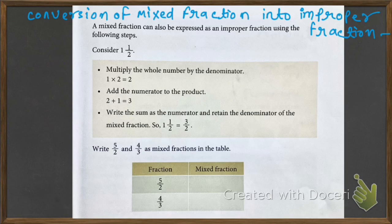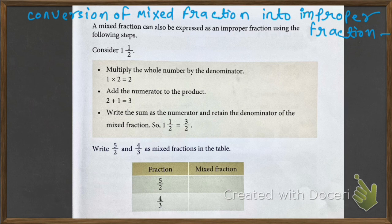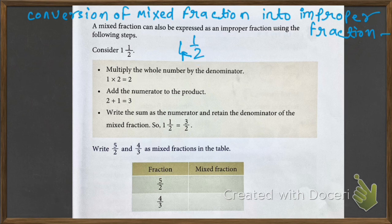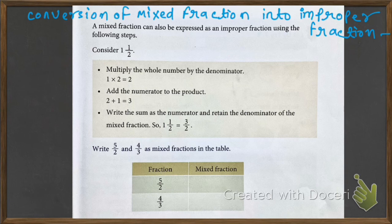Now let's see conversion of mixed fraction into improper fraction. Suppose we have 1 mixed fraction: 1 and 1 by 2. So what we'll do — we will multiply this 2 by 1. When you multiply 1 by 2, you get 2. Then in this 2 you need to add 1. So your answer will be 3. Write here 3 by 2.